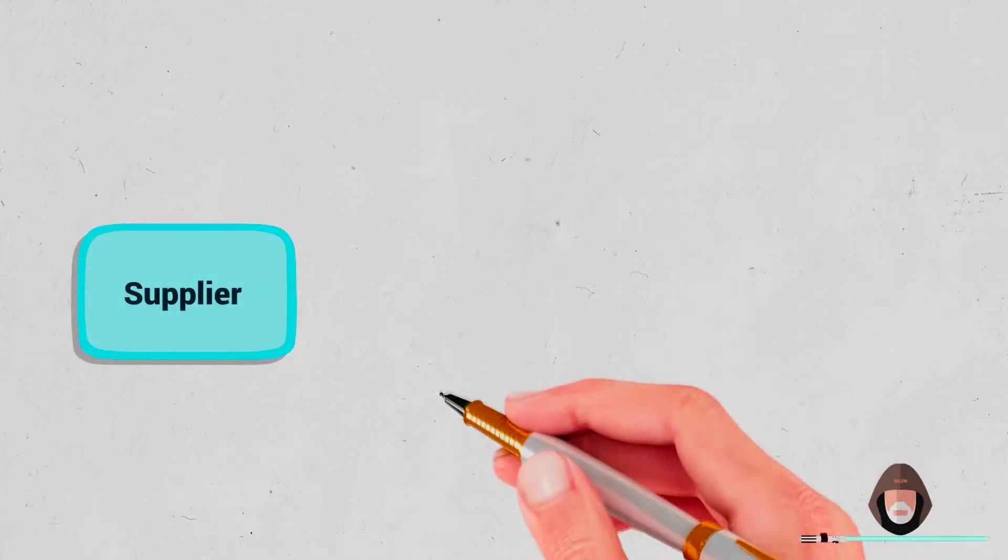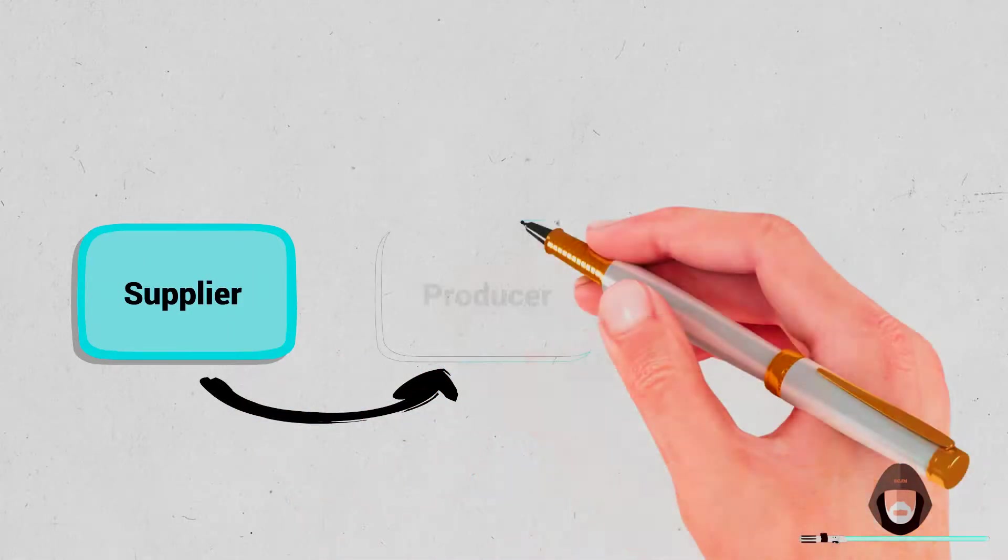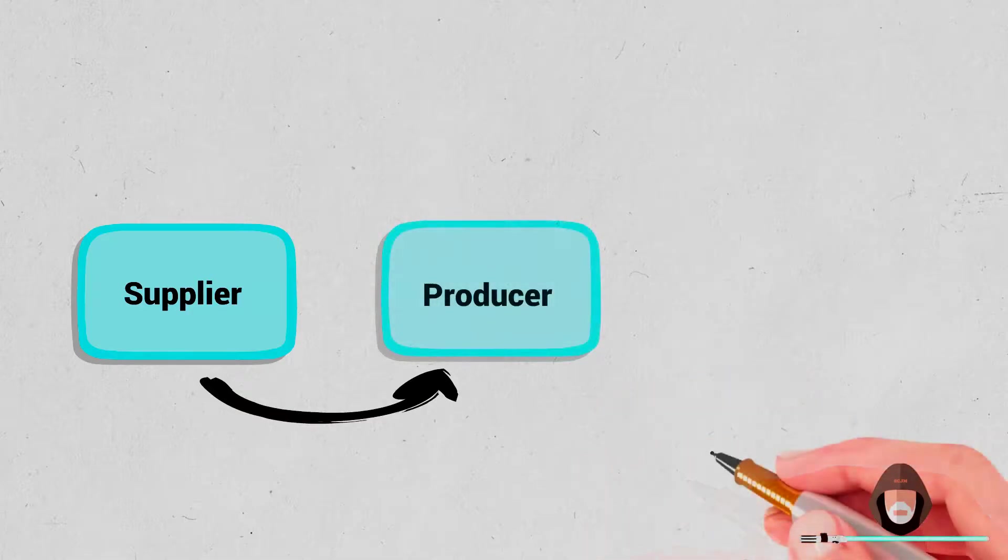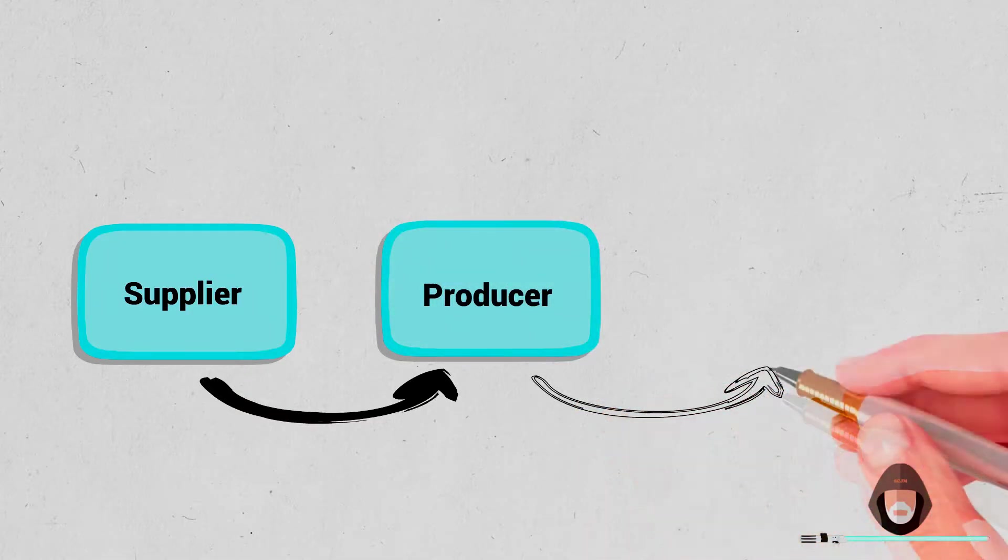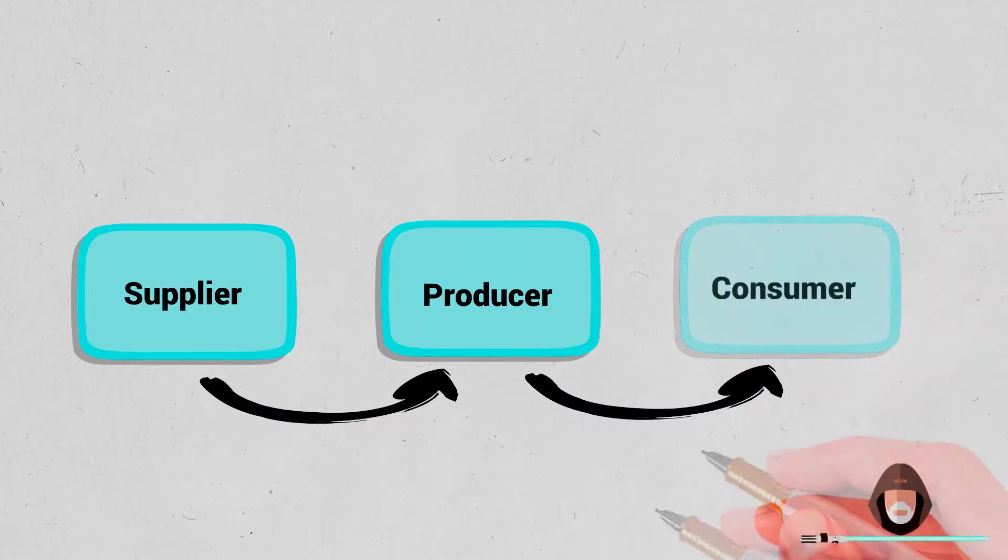We can notice from this definition that there are three entities involved in the supply chain: the supplier, producer and consumer. In between them, a flow of physical materials and services are moving from supplier up to the consumer.